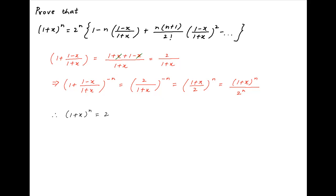We therefore have the result: (1 plus x) raised to the power n is equal to 2 raised to the power n times [1 plus (1 minus x) upon (1 plus x)] raised to the power minus n. Using the binomial theorem to expand the right-hand side,